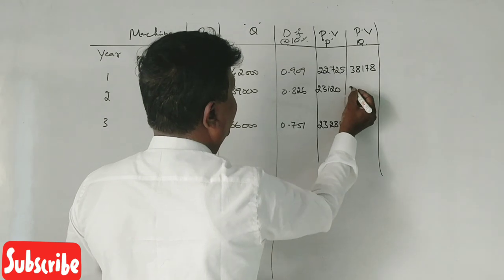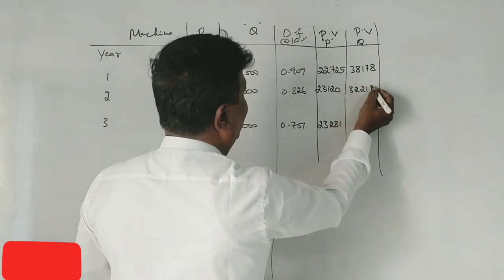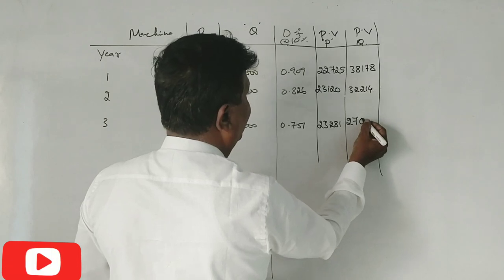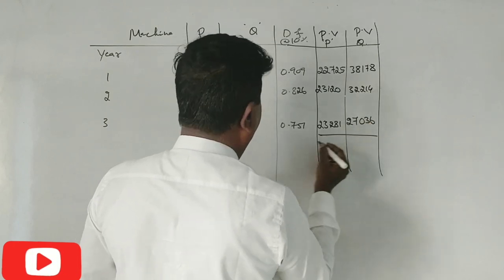32,214. 214. 27,036. 27,036. 1036. You have to total.